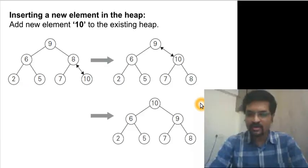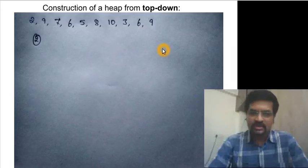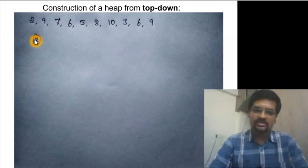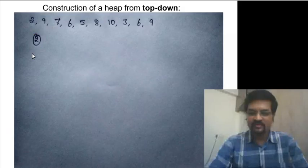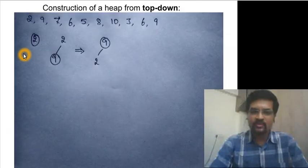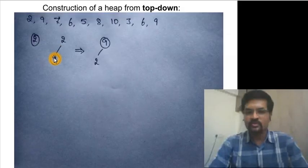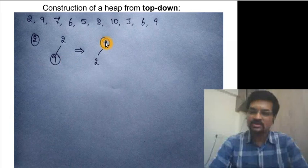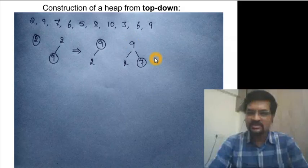Now let's construct a heap from scratch using a sequence of 10 keys. The first element is a heap by itself. When the second element is inserted at the end of the array, we check parental dominance — it's not satisfied, so we swap, and having reached the root we have a valid heap. The next key is 7, inserted and checked with its parent.